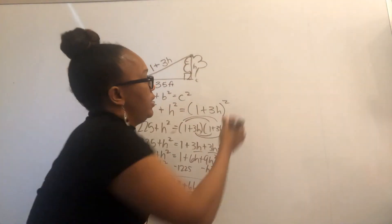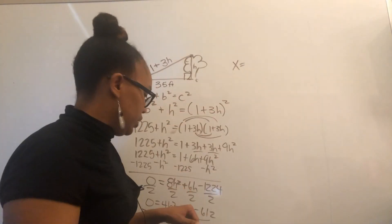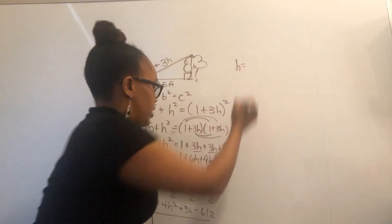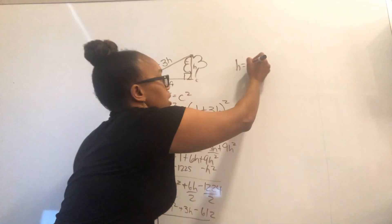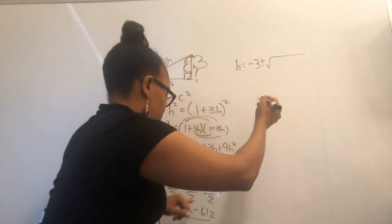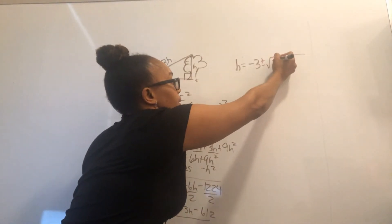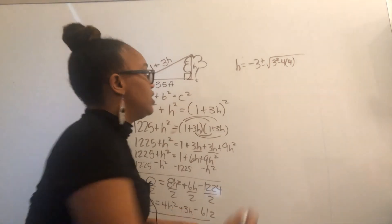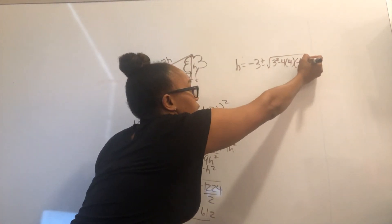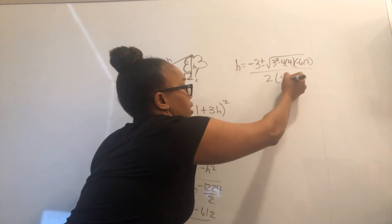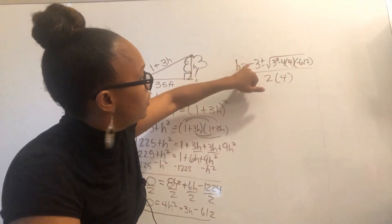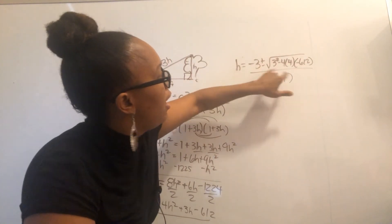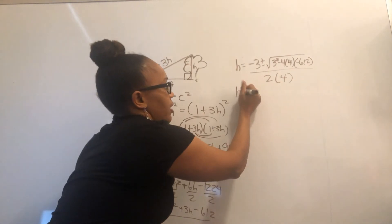Remember, we don't have X — we have H. So H equals negative B plus or minus the square root of B squared minus four times A times C, all over two A. In our equation, A is 4, B is 3, and C is negative 612. So we substitute: negative 3 plus or minus square root of 3 squared minus four times 4 times negative 612, all over two times 4, which is all over 8.